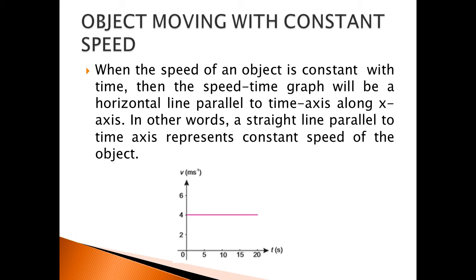When the object is moving with constant speed, the speed-time graph will be a horizontal line parallel to the time axis along the x-axis. A straight line parallel to the time axis represents constant speed of the object. In this graph, the pink line shows the constant speed of the object, with velocity or speed in meters per second along the y-axis and time in seconds along the x-axis.